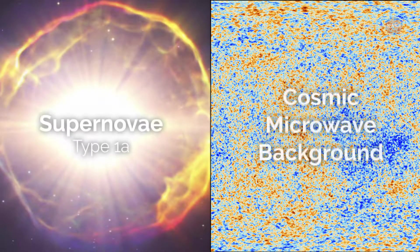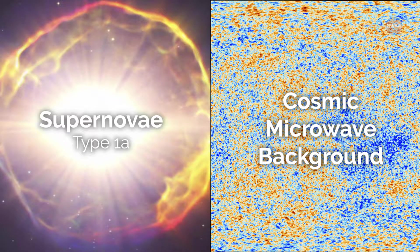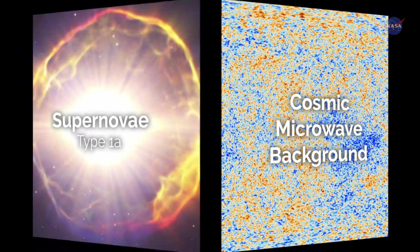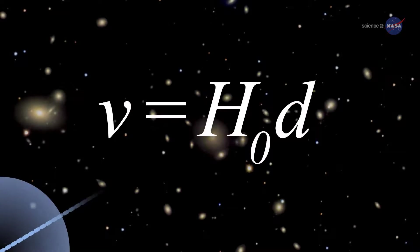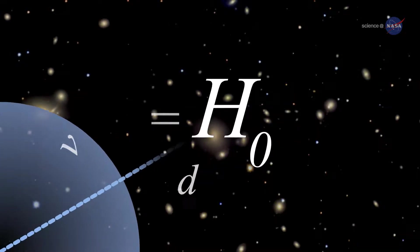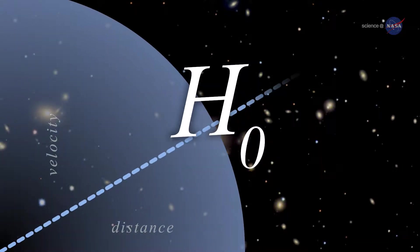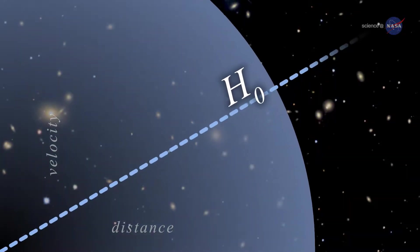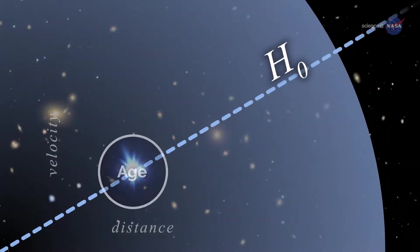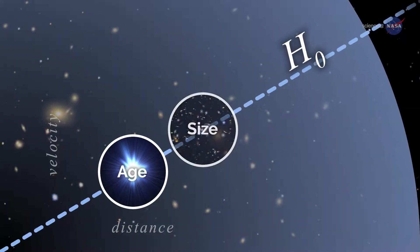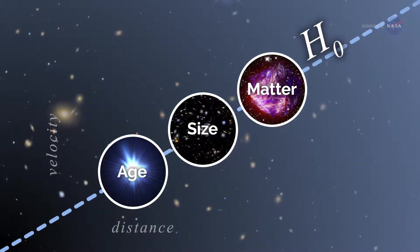There are two leading ways to measure H-naught, and for 15 years they more or less agreed with one another. Not anymore, and that's a big deal. In the standard model of cosmology, H-naught is a crucial ingredient, right up there with the speed of light. H-naught factors into everything we know about the universe — how old it is, how big it is, what it's made of.